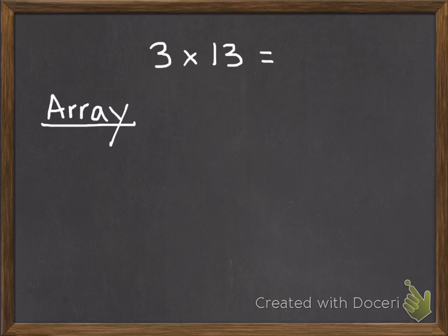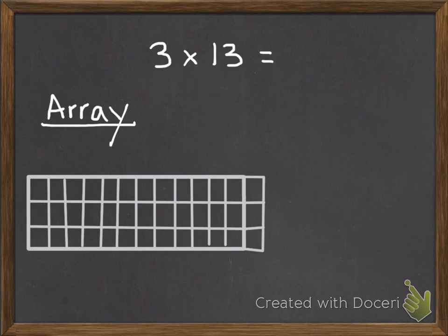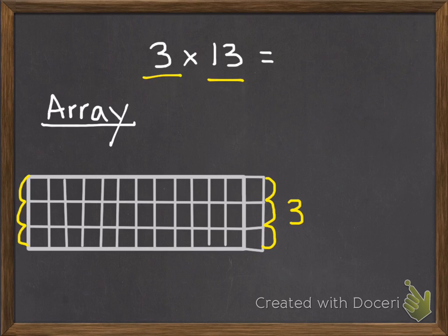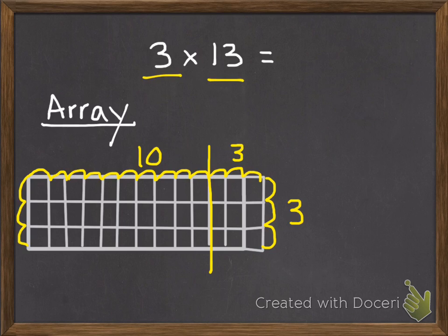So for 3 times 13, an array would look like this. The 3 in 3 times 13 is how many rows we have. So there's 3 rows and 13 columns. I'm going to break apart 13 into 10 and 3. So this is my array for 3 times 13. Now I could count all these boxes, but it's a little quicker if we can make multiplication problems out of this array.